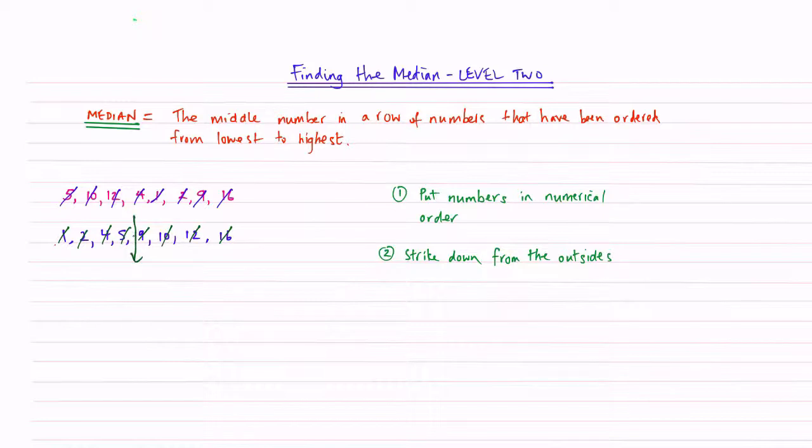It is going to lie here. And so our median is actually going to be a number that is not in our list or in our row. And that is okay.